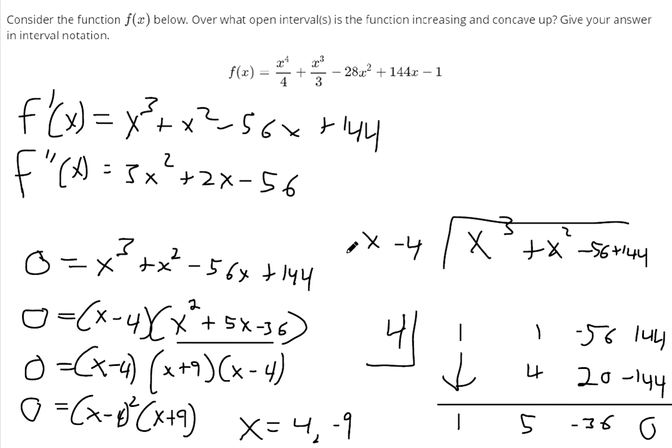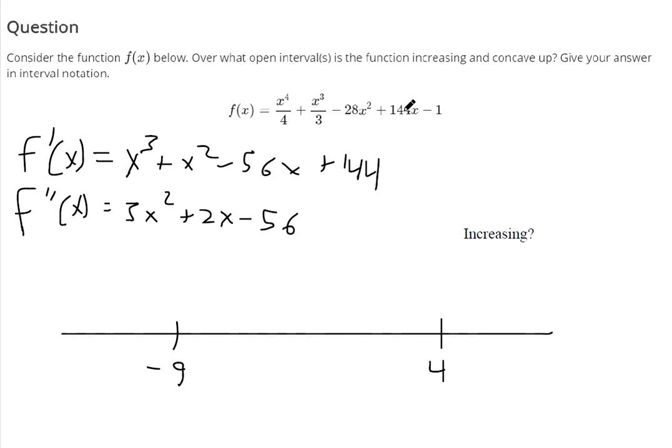Alright, so after all that work, one of our goals is to find out where the function is increasing. So it's increasing if the first derivative is greater than 0. So that's why we took these critical points and we're going to check to see whether it's increasing or decreasing to the left and to the right of these critical points.